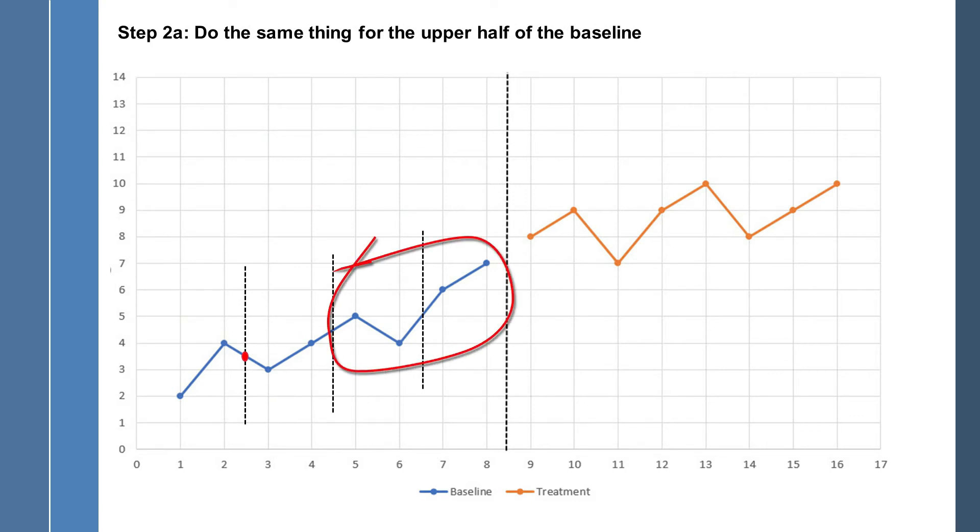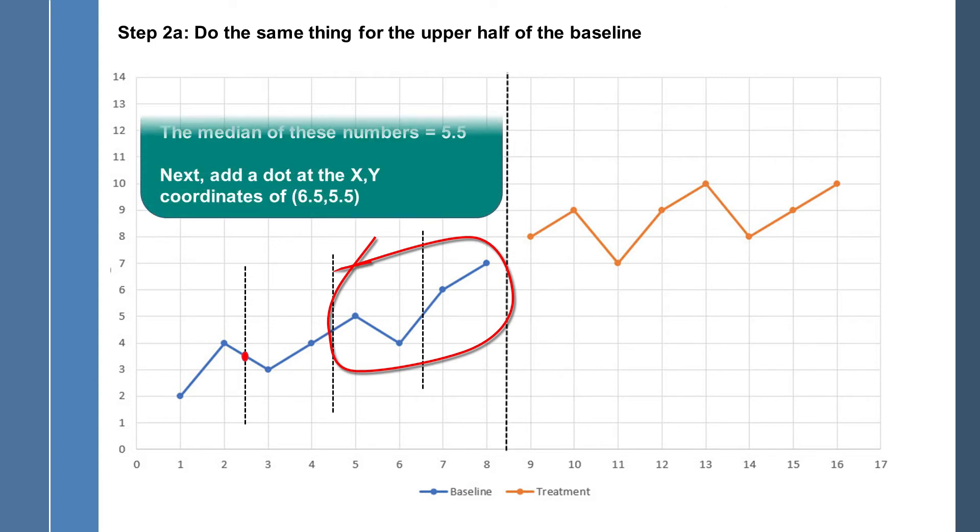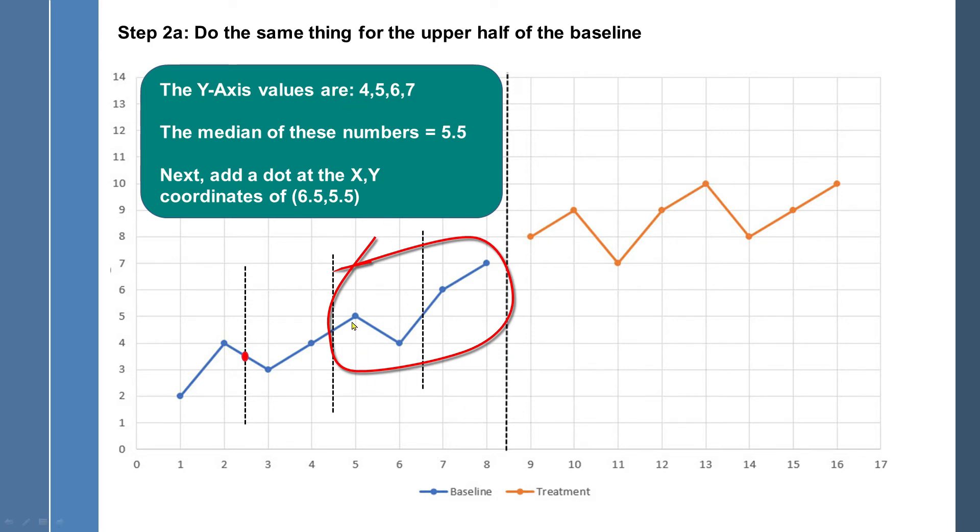So we do the same thing all over again, just considering the scores in the top half of the baseline. And those four scores are 4, 5, 6, and 7. The median of these values, and again I've rearranged these so they're not in order that you see them down here. There's the 5, there's the 4, there's the 6, and 7. At any rate, the median of these four numbers is 5.5.